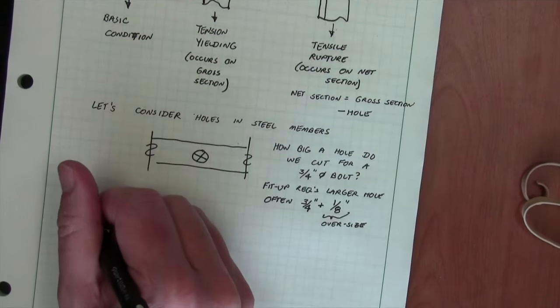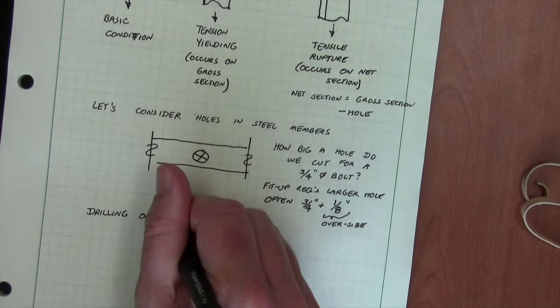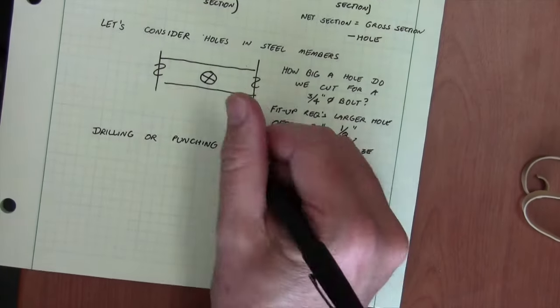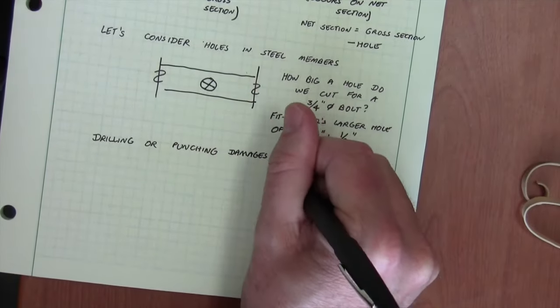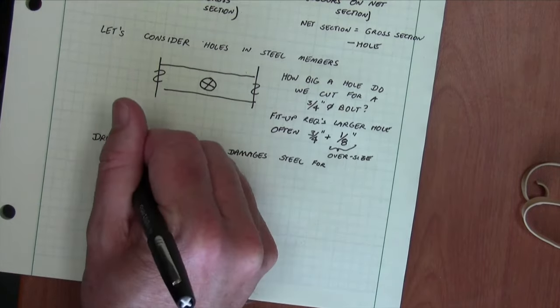You can imagine for anchor bolts, we'd want more tolerance. But for typical steel, we might be able to live with a sixteenth of an inch.